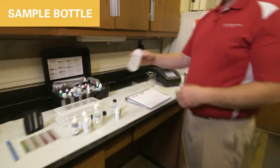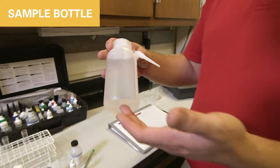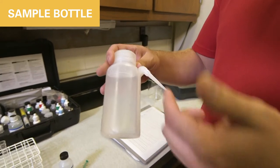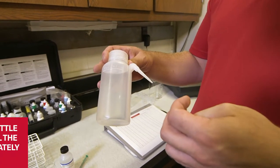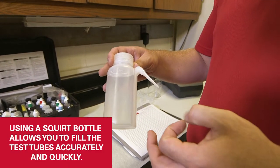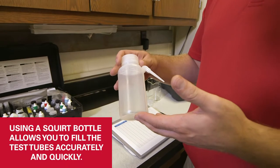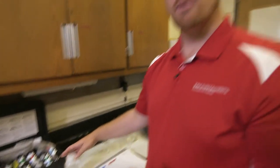In addition, we have a sample bottle with some of our aquaponic water in it already. I like to use the squirt bottle because it allows me to fill these test tubes up very accurately and quickly. This is something that you'll be doing multiple times per week and it takes time. So you want to do it quick and accurate and not have to redo your test.